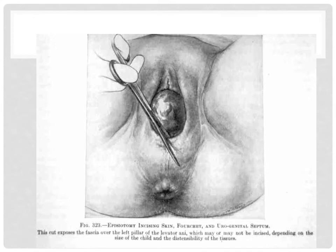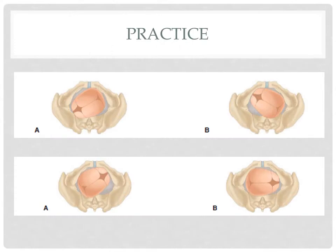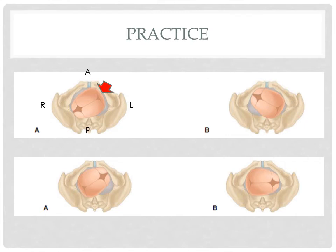Now we will do some exercises to practice how to determine fetal position. Imagine yourself as the OB-gynecologist delivering this baby — your patient is in a dorsal lithotomy position and you are facing her perineum. Draw an imaginary cross to divide the pelvic cavity into four quadrants, then determine anterior, posterior, maternal left, and maternal right. The fetus is in vertex presentation so the determining point is the occiput. The answer is left occiput anterior. For letter B, we have left occiput posterior because the occiput is pointing down.